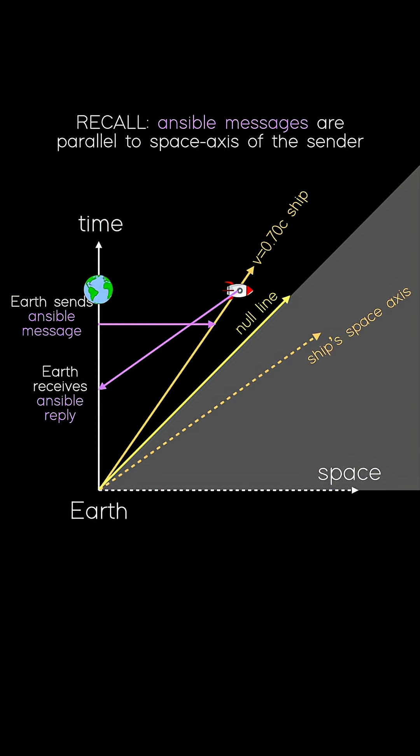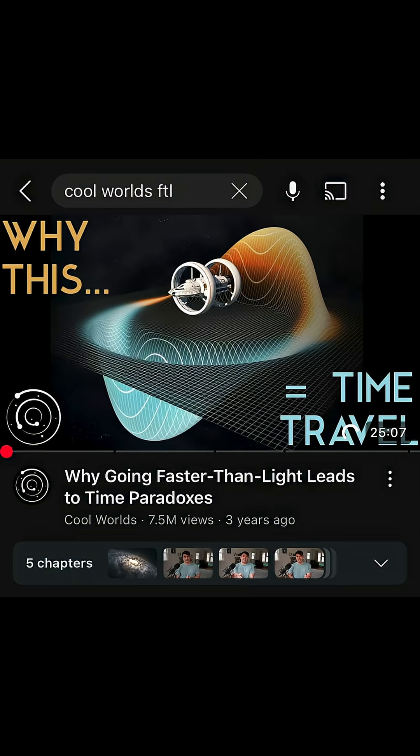This also demonstrates why observers can't agree on simultaneity in relativity. So this was a special case of an ansible message, but check out our longer video over at the CoolWords channel, where we prove this happens for any FTL message and the bizarre consequences that ensue.